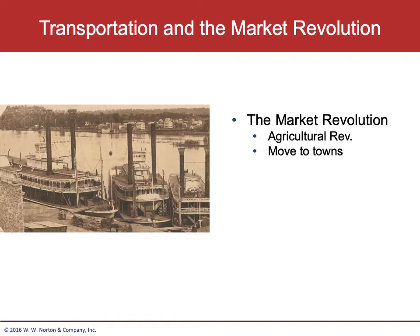In 1800, 90 percent of the American population lived in rural areas. By 1815, because of the war, more domestic industrialization was happening and people were moving into towns and cities to meet labor demand. This also requires capital — to produce products in a factory you need cash to buy raw materials and hire labor — so we see the economy shifting to a strictly cash-based economy.